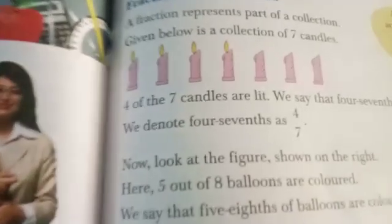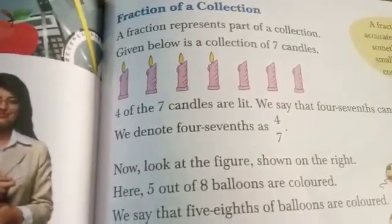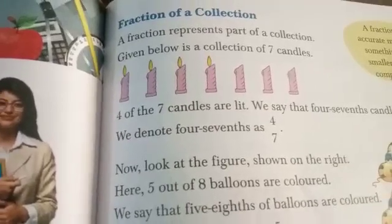Now, fraction of a collection. One third, four fourths, five eighths. Here we have four colored out of seven total. So we write it as four upon seven.